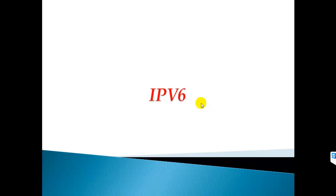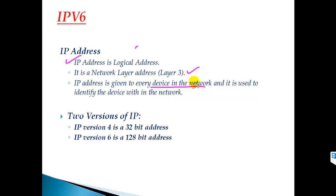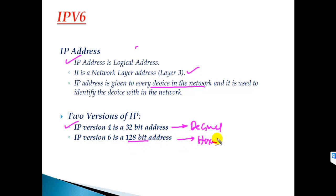In this section we'll talk about IP version 6. As you know, IPv6 is the next version of IP addressing released after IP version 4. Going back to the basics, an IP address is a logical address given to each and every device in the network — it's a Layer 3 address. We have two versions: IPv4, which is a 32-bit address written in decimal format, and IPv6, which is a 128-bit address written in hexadecimal format.